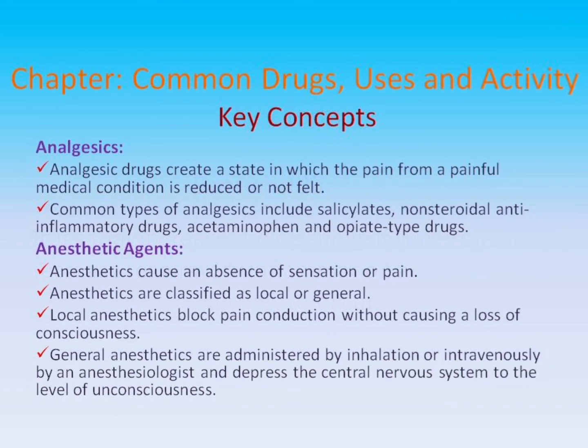Key Concepts. Analgesics: Analgesic drugs create a state in which the pain from a painful medical condition is reduced or not felt. Common types include salicylates, nonsteroidal anti-inflammatory drugs, acetaminophen, and opiate-type drugs. Anesthetic agents: Anesthetics cause an absence of sensation or pain and are classified as local or general. Local anesthetics block pain conduction without causing a loss of consciousness. General anesthetics are administered by inhalation or intravenously by an anesthesiologist, and depress the central nervous system to the level of unconsciousness.